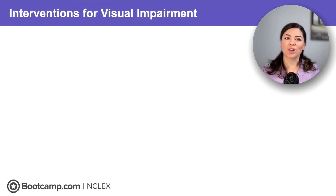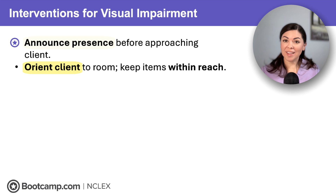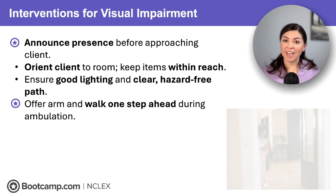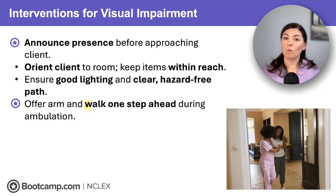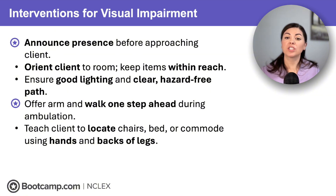First, how do we support clients with visual impairment? Well, remember, it is all about safety and promoting the client's independence. We start by announcing our presence before approaching the client to prevent them from being startled. We must also orient the client to the room and ensure all personal items are kept within reach. We should maintain a well-lit, clutter-free environment for the client to walk without tripping. Remember to offer your arm and walk one step ahead of the client when assisting them with ambulation. Clients should be instructed to feel chairs, beds, or bedside commodes with their hands and the back of their legs before sitting to prevent falls.